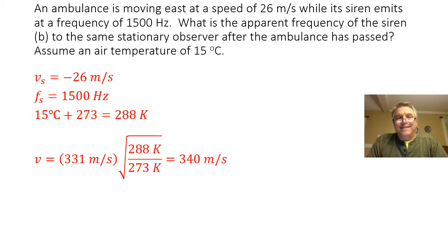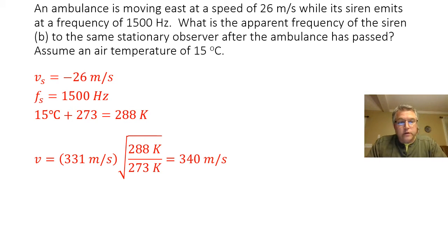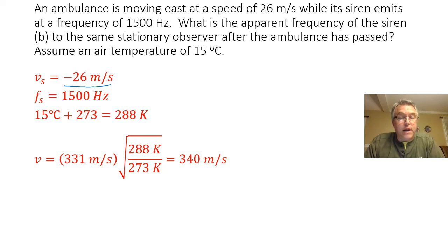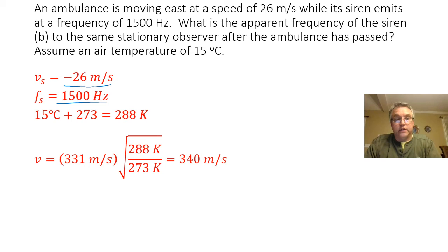Part B asks: what is the apparent frequency of the siren to the same stationary observer after the ambulance has passed? The observer is still stationary, so their velocity remains zero. The ambulance is still moving at 26 meters per second, but now that it has passed the observer it is moving away, so its velocity now becomes negative 26 meters per second. The frequency of the siren hasn't changed, and the temperature is still 15 degrees Celsius.